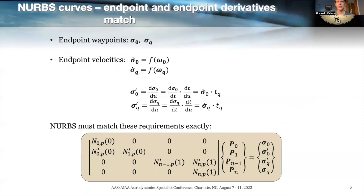We want to incorporate the pieces of information we are sure of in the calculation of the control points. Assuming Q plus 1 attitude waypoints, we are only sure about the first and the last one — the initial and target attitudes — and we also know the angular rate at the beginning and the target angular rate at the end. This allows us to set up a 4 by 4 linear system to compute the four control points P0, P1, Pn-1, and Pn — the first two and last two control points, assuming n plus 1 control points total. The number of control points can also be set by the user.